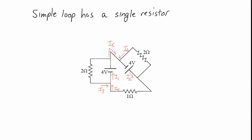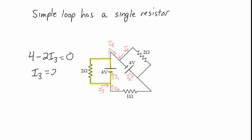We want to look for simple loops in this problem, and there are actually three of them. Here's one shown in yellow: go up through the 4-volt battery, go down through this one resistor, and back to our starting point. Using the loop rule on that loop: we start here, go up four, then go down through the resistor — so we subtract 2·I3. That gives us 4 minus 2·I3 equals zero. We can immediately solve to find that I3 equals 2 amps.